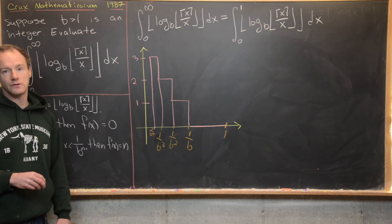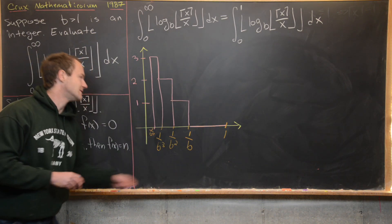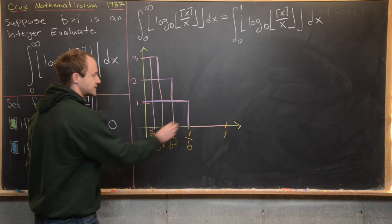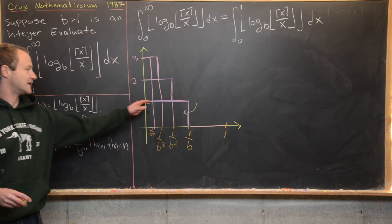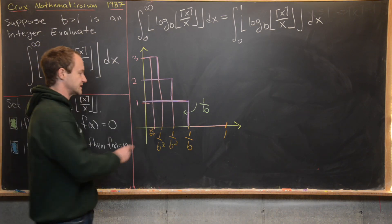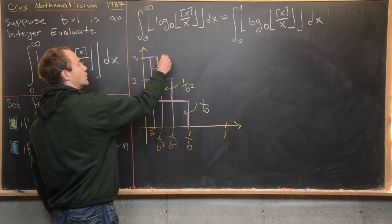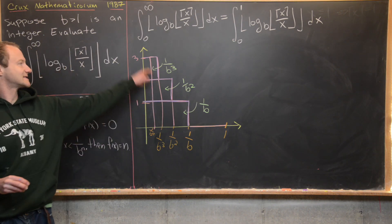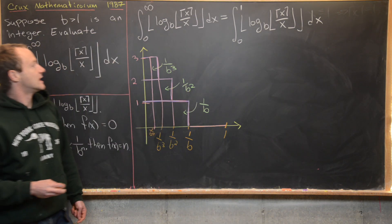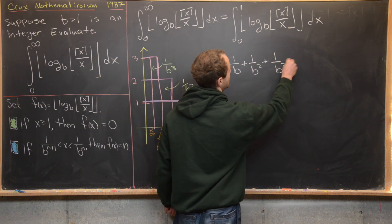Summing those rectangles directly is a little tricky, but if we look at the area on its side instead, it's easier. Looking sideways, the purple rectangles have areas one times one over b, one times one over b squared, one times one over b cubed, and so on. So we can write the total as one over b plus one over b squared plus one over b cubed plus dot dot dot — an infinite sum.